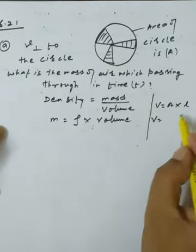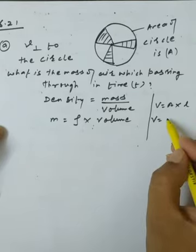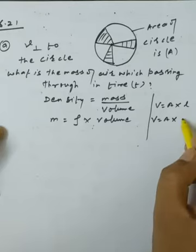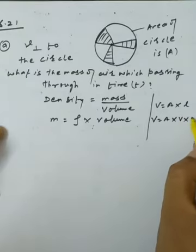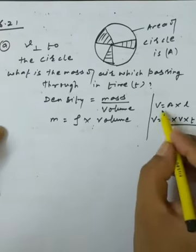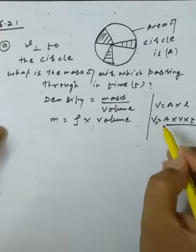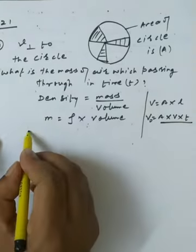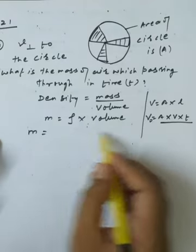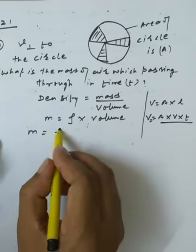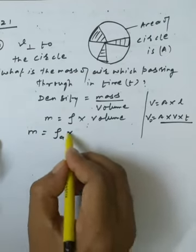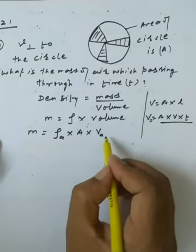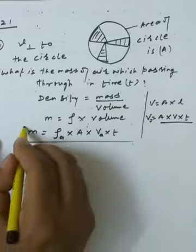Length can be expressed via speed: distance = velocity × time. So volume = area × velocity × time. Therefore, the mass of air flowing through the circle in time T is M = ρ·A·V·T.